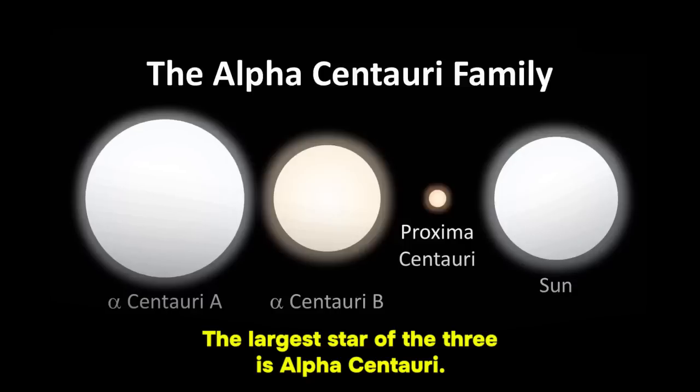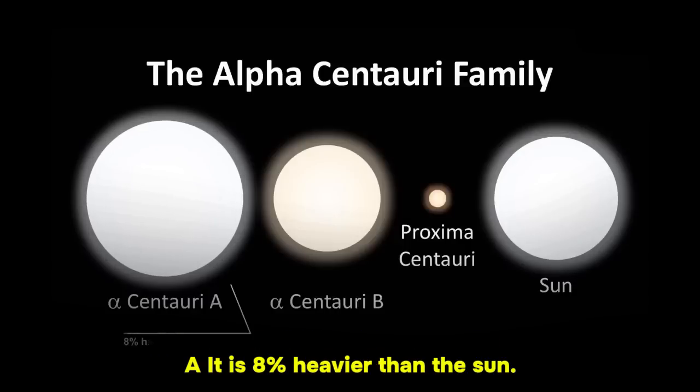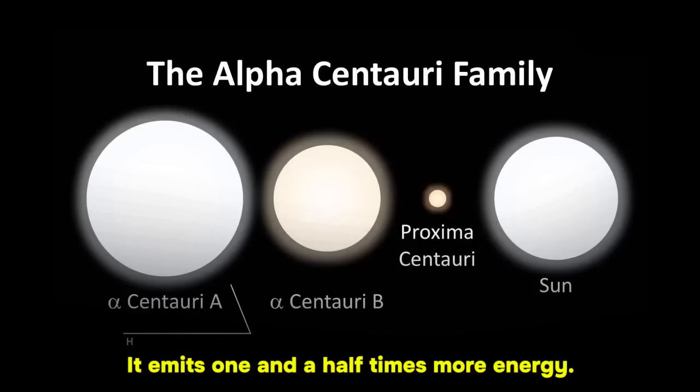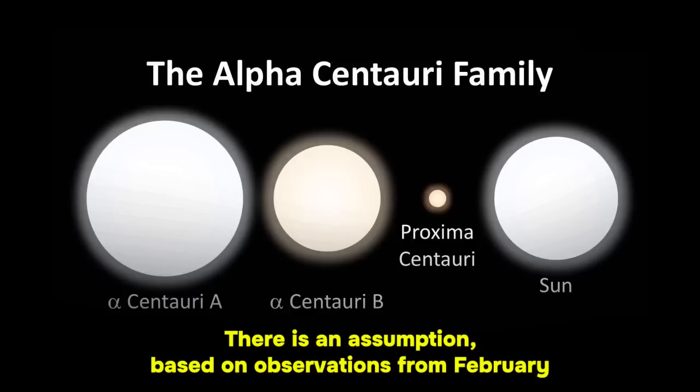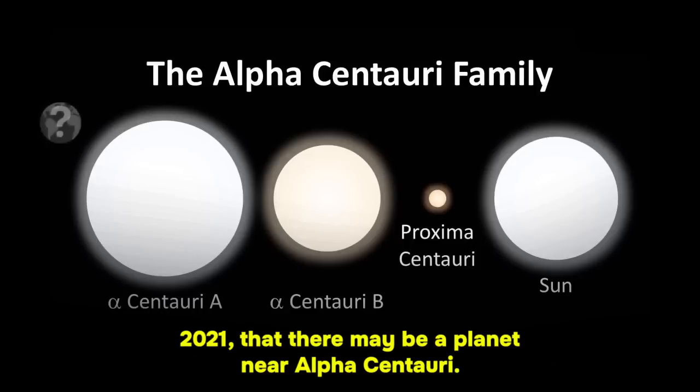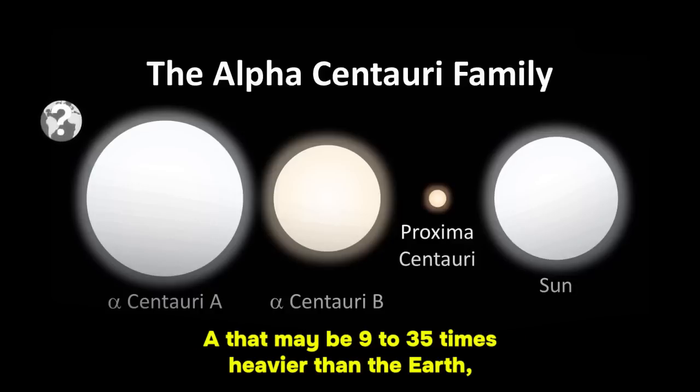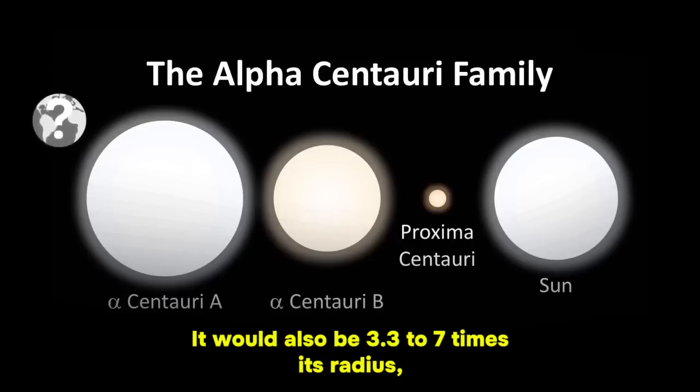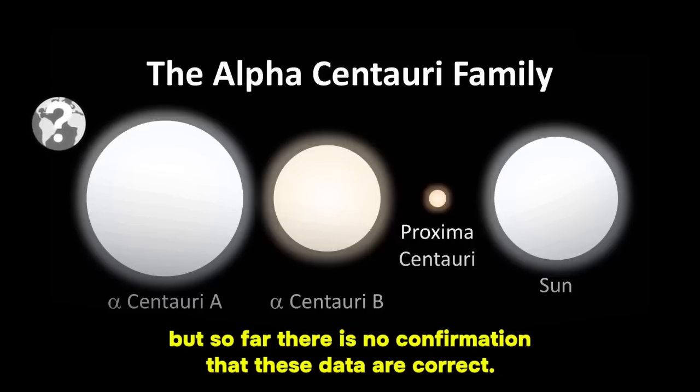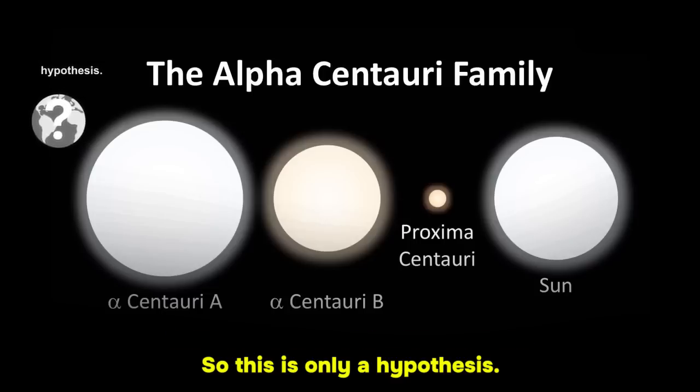The largest star of the three is Alpha Centauri A. It is 8% heavier than the Sun. It emits one and a half times more energy, and so far, there have been no definitive traces of any planets being present around it. There is an assumption based on observations from February 2021 that there may be a planet near Alpha Centauri A that may be 9 to 35 times heavier than the Earth. According to the same assumptions, it would also be 3.3 to 7 times its radius. But so far, there is no confirmation that these data are correct. So, this is only a hypothesis.